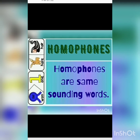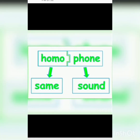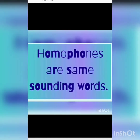Homophones are words having the same sound or pronunciation but a difference in spelling and meaning. The word homophone is derived from two words: homo means same and phone means voice or sound. So, children, homophones are same-sounding words.